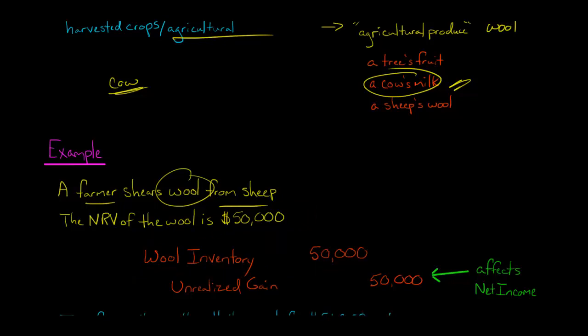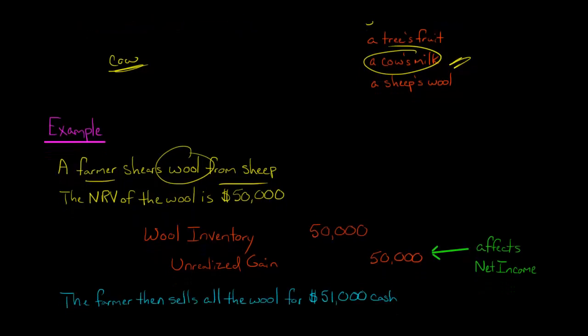Why would we debit the net realizable value instead of the cost? Well, it's not easy to figure out what the cost is to actually produce that wool. And we have to have some kind of credit. We can't just debit something without a corresponding credit. So we're going to credit unrealized gain. We're going to have an unrealized gain of $50,000, and that's going to go to the income statement, affecting the company's profitability.